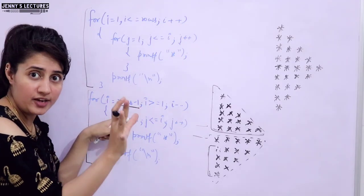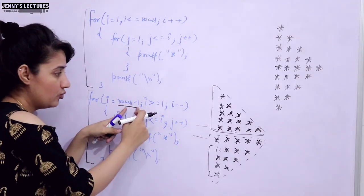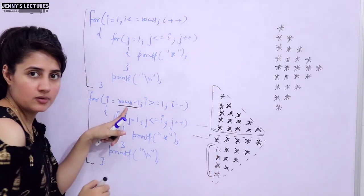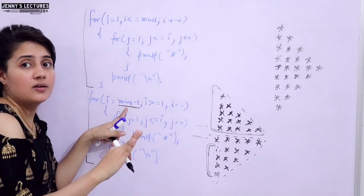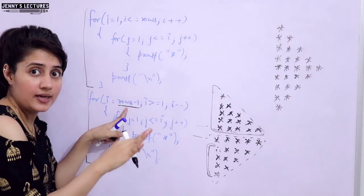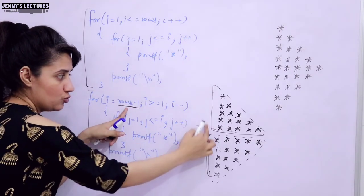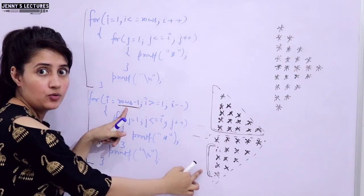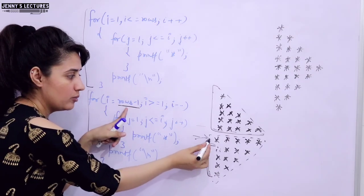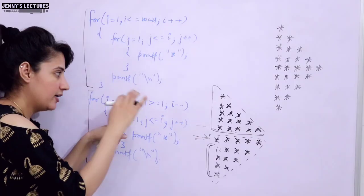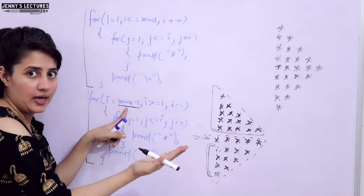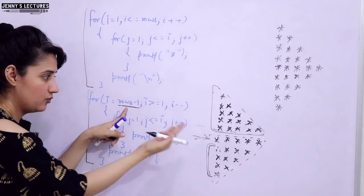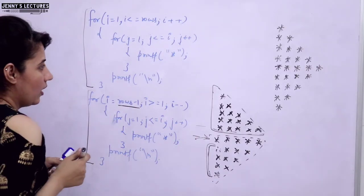If we take number of rows as 5, this second loop would be executed only 4 times, and that's exactly what we want — only 4 lines. If number of rows is 10, then for the half pyramid we want 10 lines, but from the inverted half pyramid we want only 9 lines. We don't want the line having the maximum number of stars. That is why 10 minus 1 equals 9, and this loop would execute only 9 times.